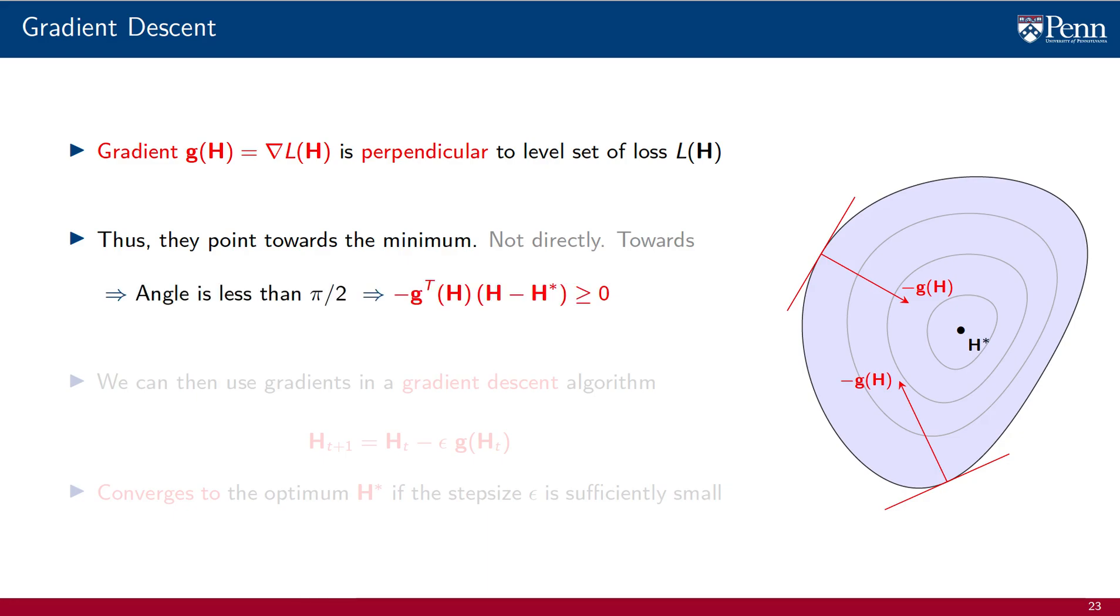Mathematically, the angle between the negative gradient and the arrow h minus h star that points to the minimum is less than pi over 2. This is because the inner product of these two vectors, the negative gradient and h minus h star, is positive.